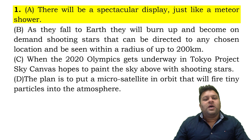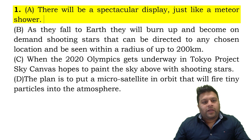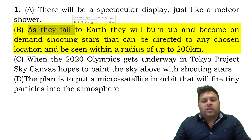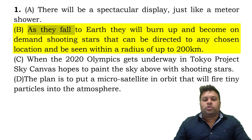This sentence is not an independent sentence because it's referring to something else. The next sentence says 'as they fall to earth they will burn up and become on-demand shooting stars that can be directed to any chosen location and be seen within a radius of up to 200 kilometers.' 'They fall' — we don't know what 'they' refers to, so this isn't the first sentence either.